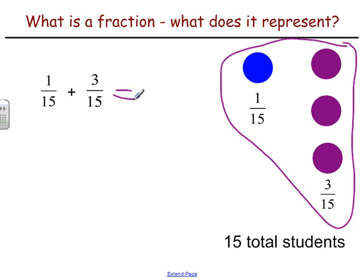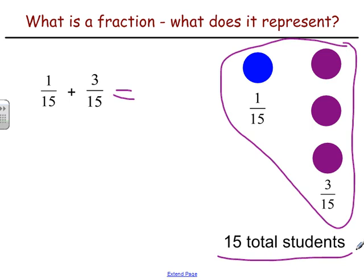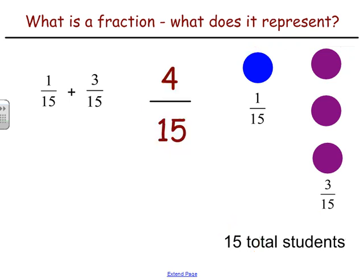Taking a look back at the total number of students, if we try to add the blue students and the purple students together, it really doesn't change the total number of students that we have. We're still going to have 15 total students in the class, so this fraction is still going to be out of a total of 15. We have one student for blue and three students for purple, so that special unique subset is one plus three out of the same 15 total students — giving us four out of 15.